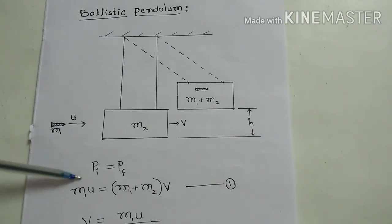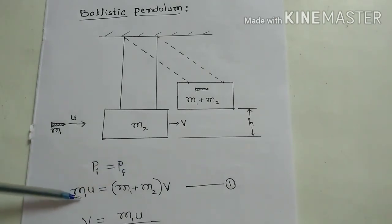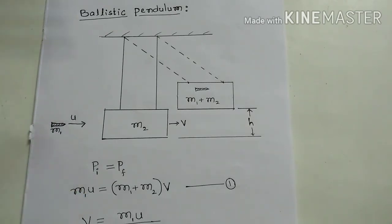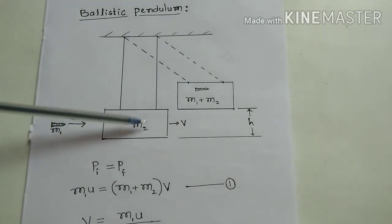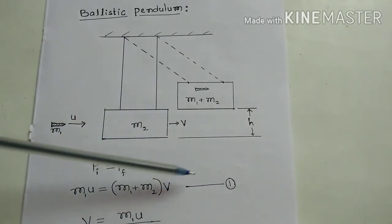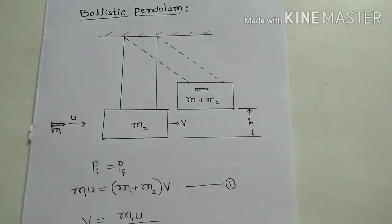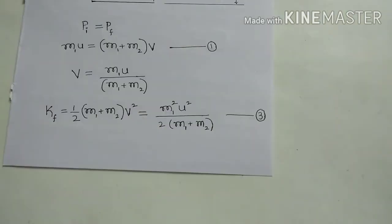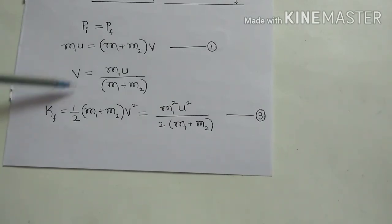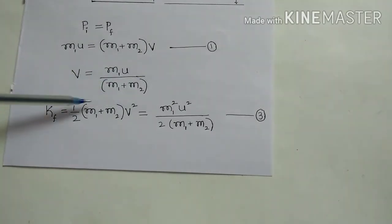Step one — momentum conservation. Total momentum before collision pi equals total momentum after collision pf. Before collision, m1 is moving with velocity u so the initial momentum is m1·u. Initially m2 is at rest. After collision, m1 has pierced inside m2 and they move together, so the final momentum is (m1 + m2)·v. This is equation one. From this, we can find v, the velocity of m1 and m2 together just after collision, which gives us: v = m1·u / (m1 + m2).